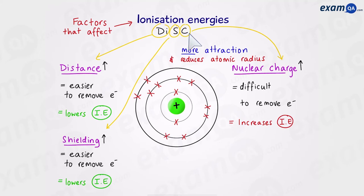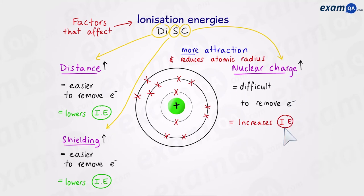Remember: when distance and shielding increase, this lowers the ionization energy. However, when nuclear charge increases, this increases the ionization energy. Now that we know the factors, let's put this into practice by looking at the first trend.